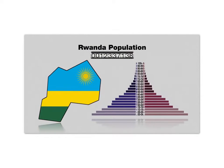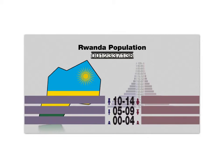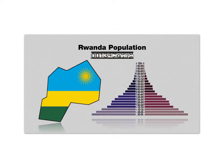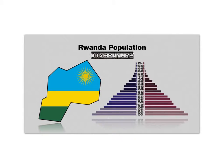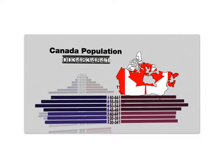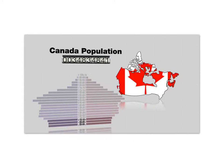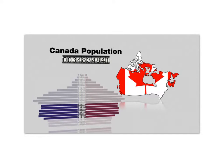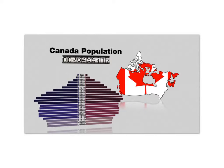Rwanda's population pyramid shows it to be a fast-growing country. With most of the population in the youngest age groups at the bottom of the pyramid, numbers will grow rapidly as today's children reach their reproductive years and have children of their own — the total population is almost certain to double within the next few decades. In Canada, most of the population is clustered around the middle of the graph. Because there are fewer people in the pre-reproductive age groups than in the reproductive ones, the population will grow more slowly.